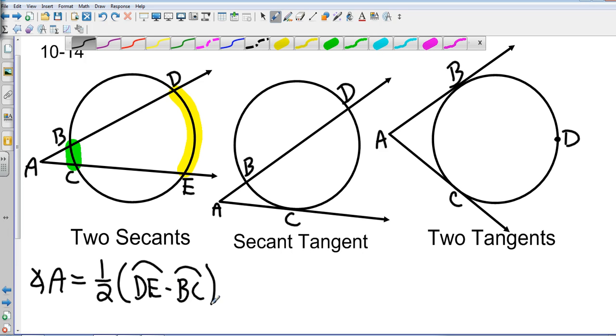When you have a secant and a tangent, you can think the same thing. We're going to take half of the larger arc minus the smaller arc, so that's going to end up being one-half of DC minus BC.